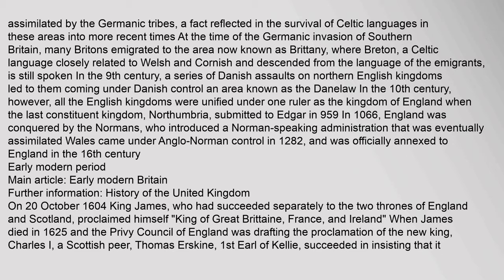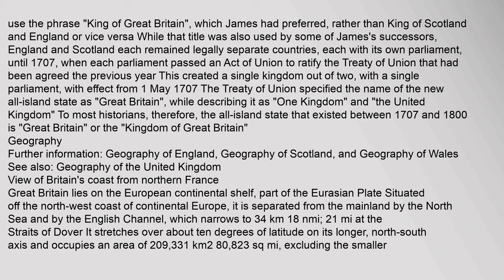Rather than King of Scotland and England or vice versa. While that title was also used by some of James's successors, England and Scotland each remained legally separate countries, each with its own parliament, until 1707, when each parliament passed an Act of Union to ratify the Treaty of Union. This created a single kingdom out of two, with a single parliament, with effect from the 1st of May 1707. The Treaty of Union specified the name of the new all-island state as Great Britain, while describing it as 'one kingdom' and 'the United Kingdom.' The all-island state that existed between 1707 and 1800 is known as 'Great Britain' or the 'Kingdom of Great Britain.'